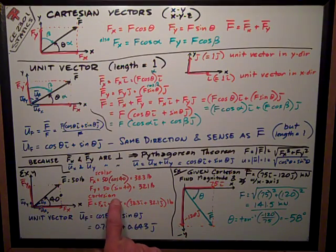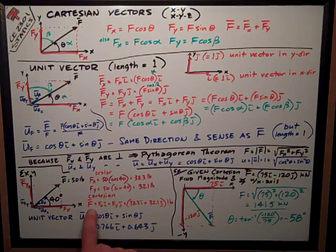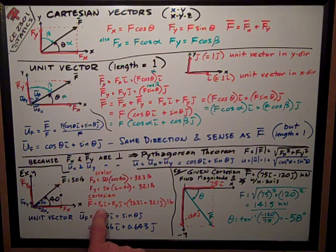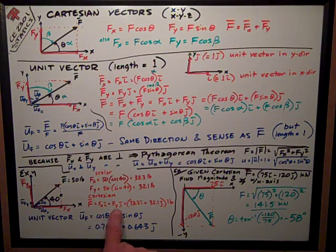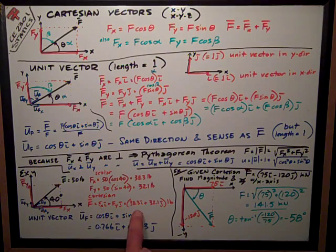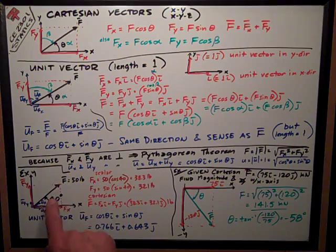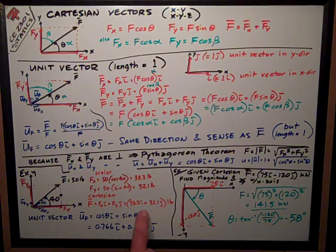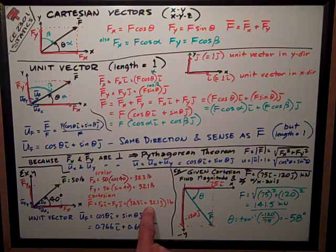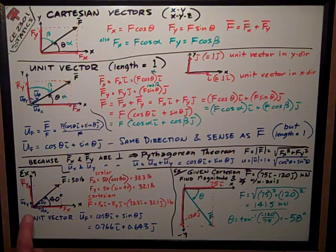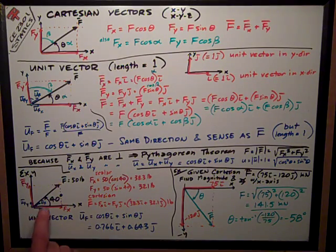I can express it in a Cartesian form like this. Vector f is fxi plus fyj, which is 38.3i plus 32.1j pounds. This is a way of expressing this vector. This is the Cartesian way.